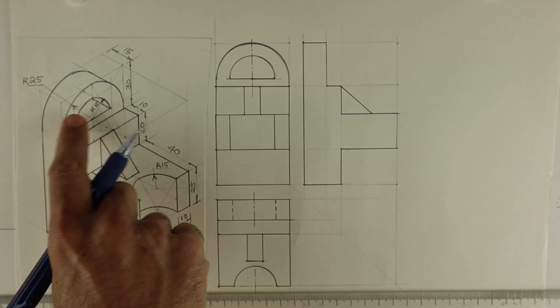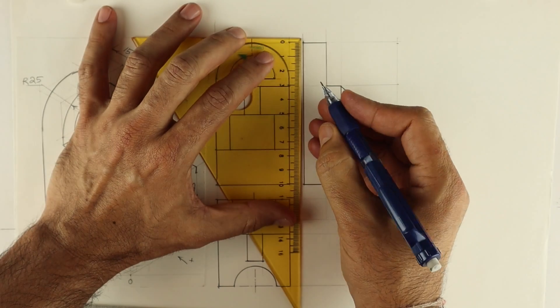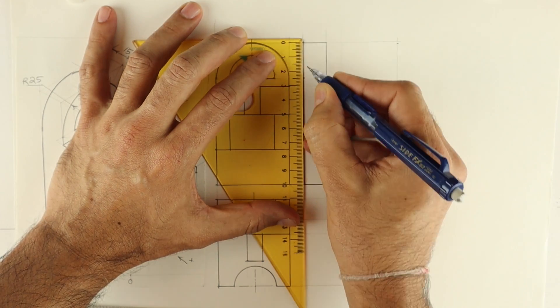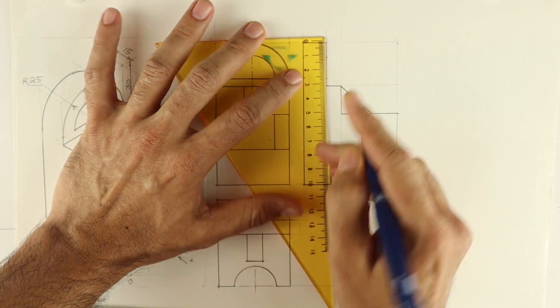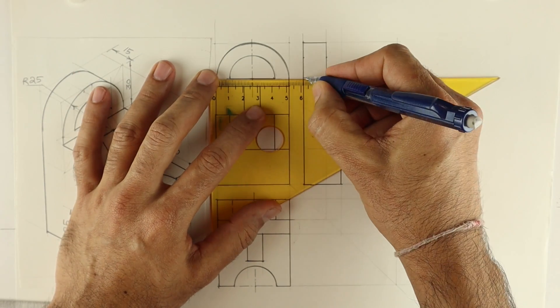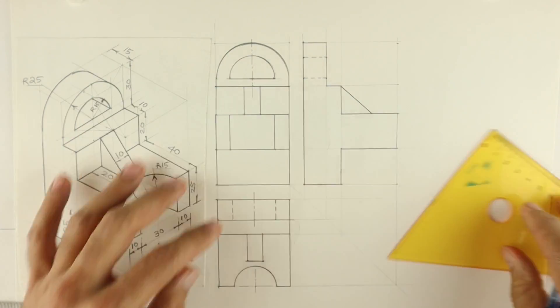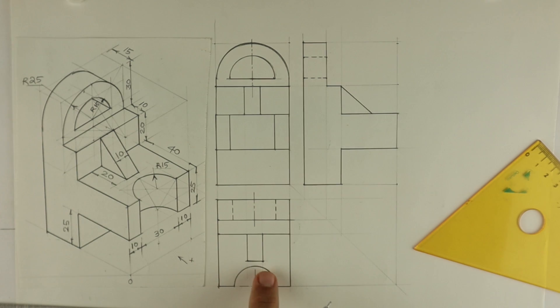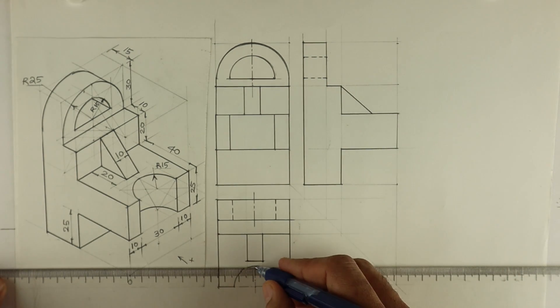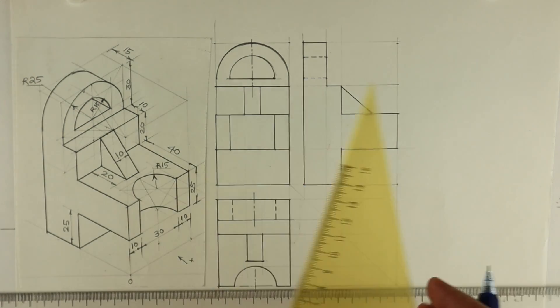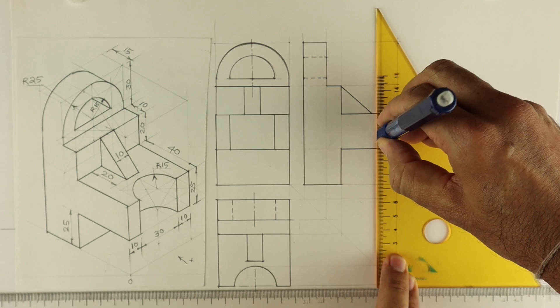So now we have to draw only dotted line. See this part, extreme top portion and the center line. So in this we'll have two dotted lines in side view: one is for this and one is for this. And one more dotted line for this that you can project from top view. We can project from top view to side view. See, like this.